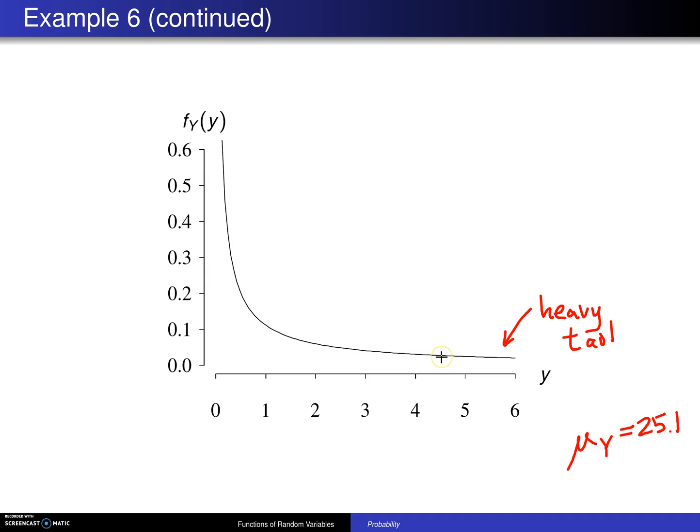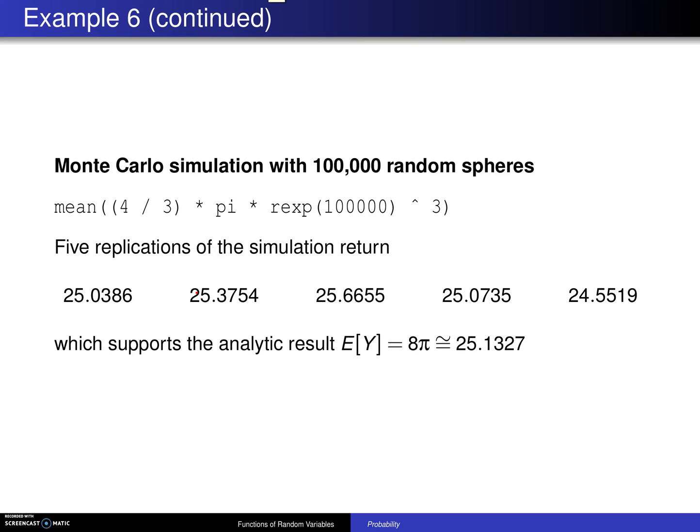Now if you're nervous about this picture here and the fact that you've got a mean all the way out there at 25.1, you can run a Monte Carlo simulation, and believe it or not this can be done in one line in R. So this is an R statement right here, and what it does is it generates 100,000 random exponential variates with a mean of one. The second parameter in REXP is defaulted, so here are 100,000 random radiuses. When you multiply those by four-thirds pi and cube them, there you get 100,000 volumes. So this right here gives you 100,000 volumes. When you calculate the mean of those volumes and run this one statement five times—it runs fairly quickly—you get a bunch of numbers here which are jumping around our theoretical value of 25.1. So this does indeed support the analytic result.